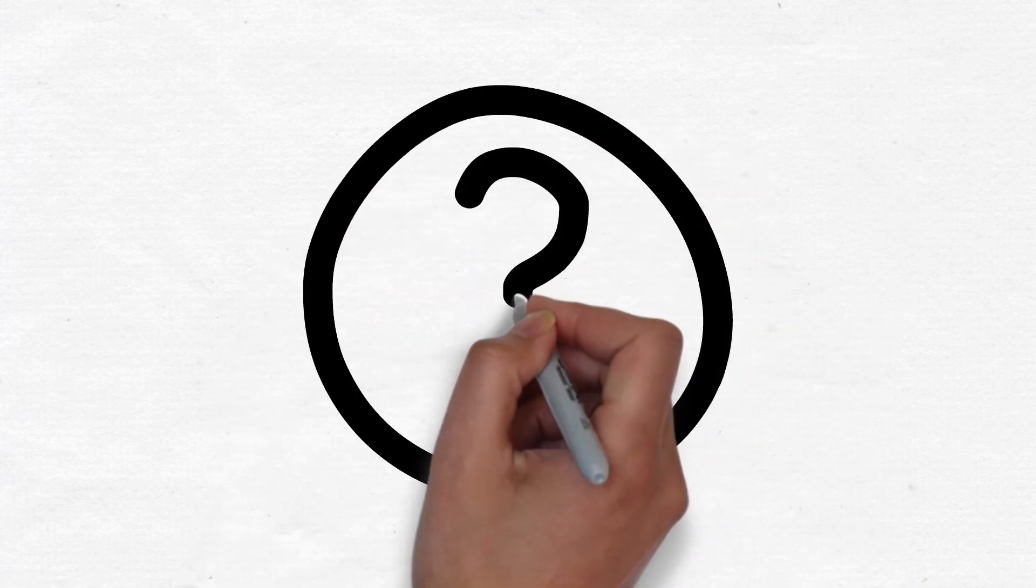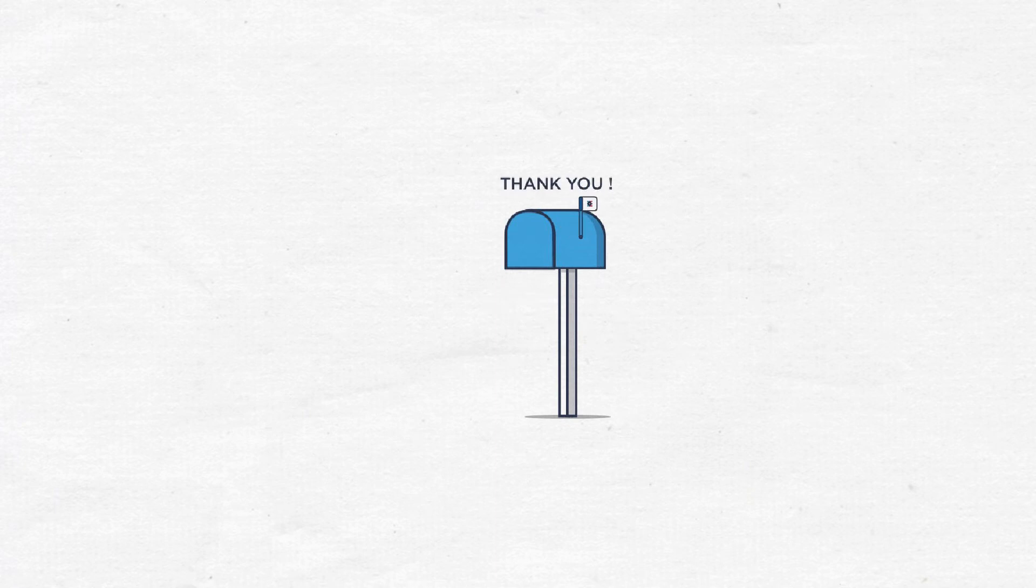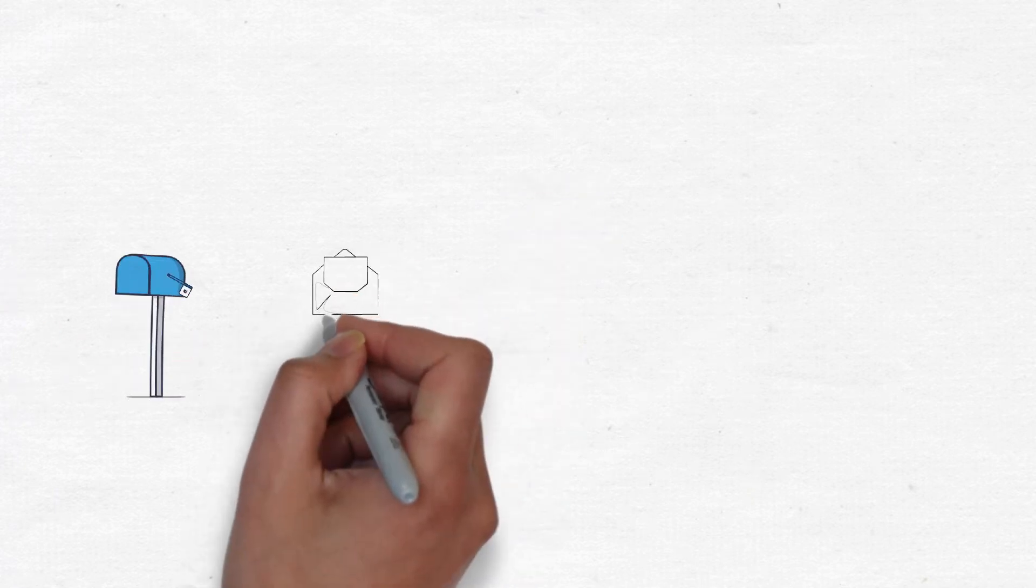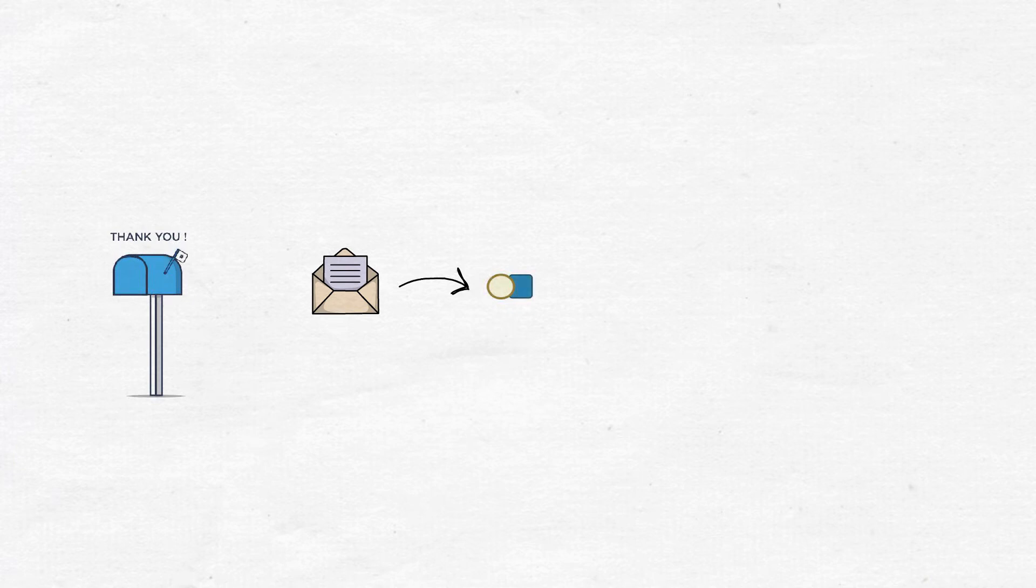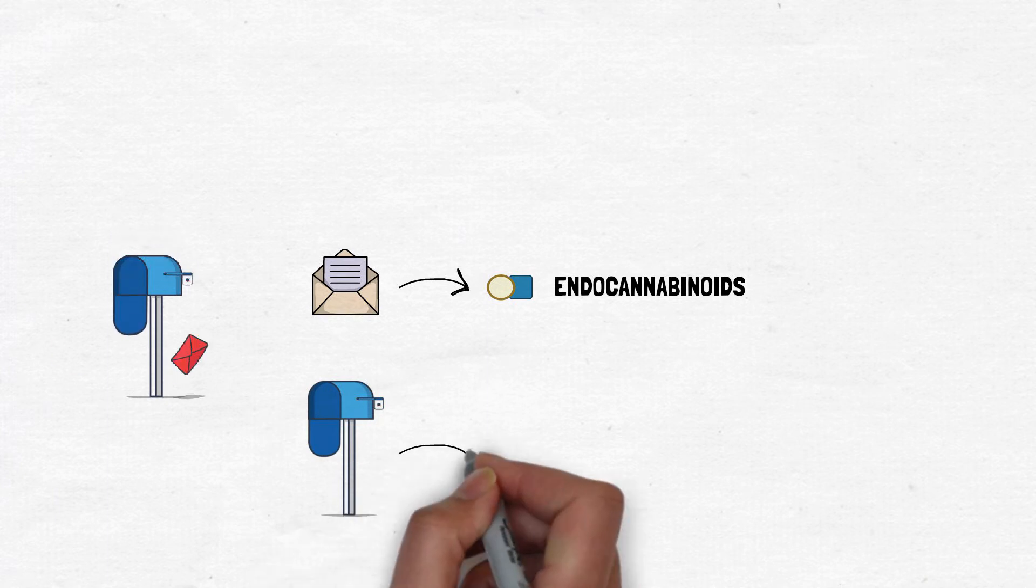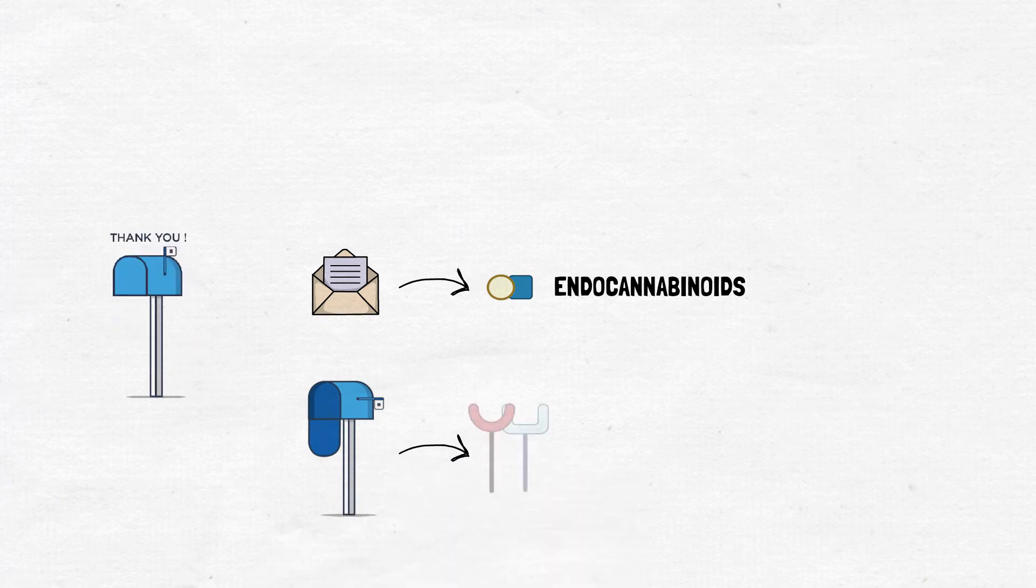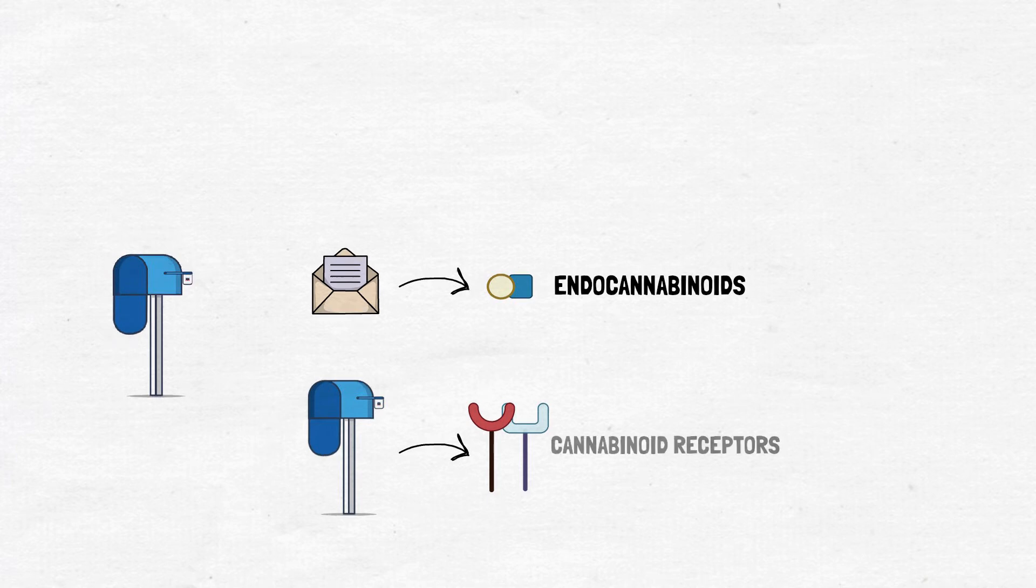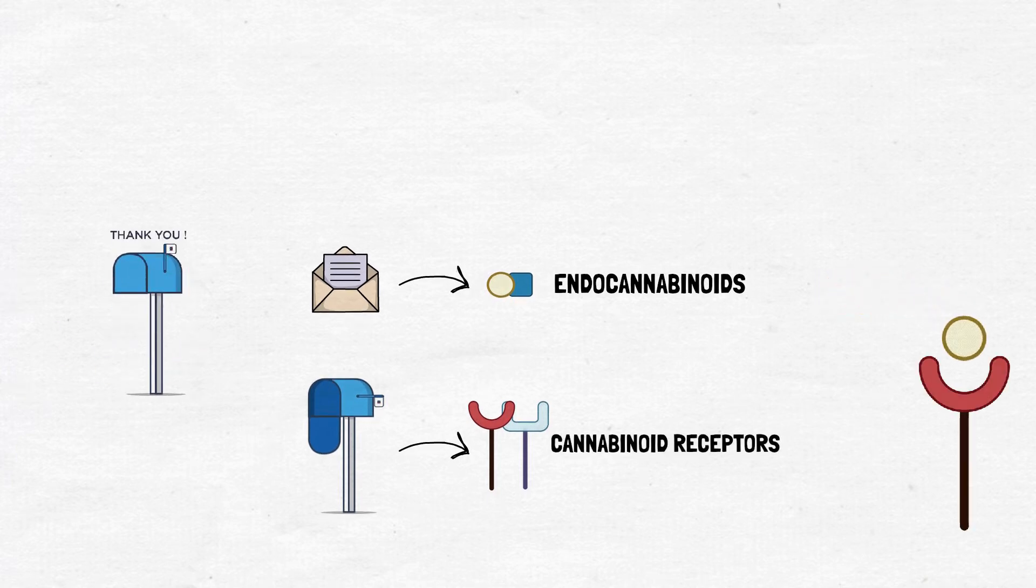But how does it work as a signaling network? The endocannabinoid system is composed of messages and mailboxes. The messages are represented by the signaling molecules produced by the organism, named endocannabinoids. The mailboxes are represented by the receptors located all along the body, called cannabinoid receptors. The specific endocannabinoids are released and find their own receptor.